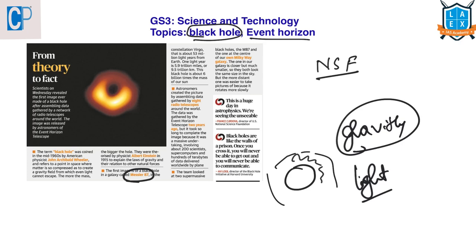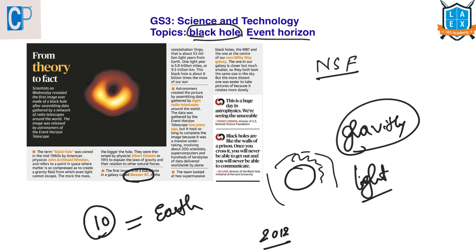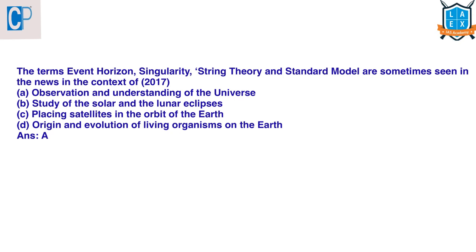The Event Horizon Telescope is a network of 10 radio telescopes on 4 continents. These 10 telescopes collectively operate like a single instrument nearly the size of the Earth. The Event Horizon Telescope project is an international partnership formed in 2012, with the objective to directly observe the immediate environment of a black hole. The findings will provide insights into this celestial object. Now let's see a 2017 prelims question.